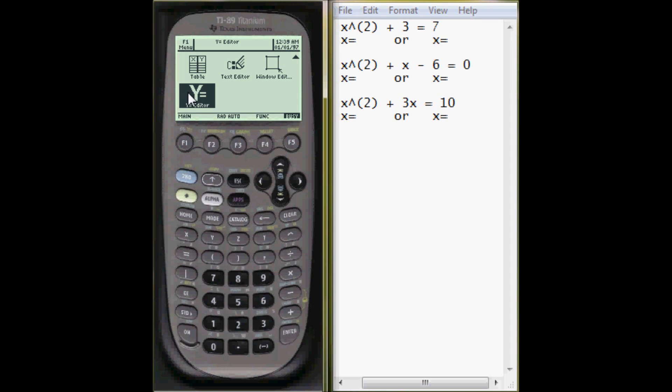First turn your calculator on, choose the Y equals editor. If you're not on the app screen to begin with, you can always press the green diamond key and F1.